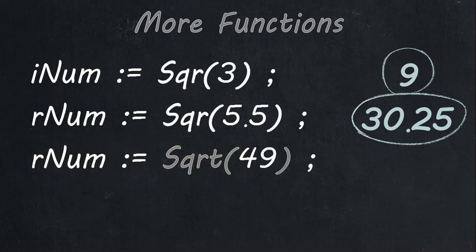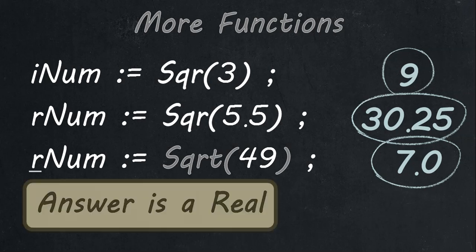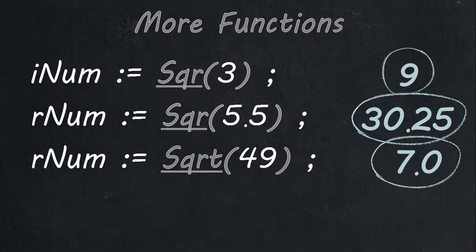There is another option where you can square root a number — you use SQRT, which square roots it. So the square root of 49 is not 7, it's 7.0. The answer will always be a real number, so you must remember that for this scenario — the answer is always a real.